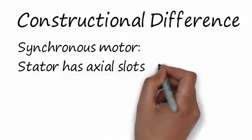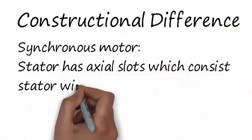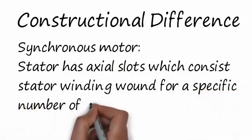Constructional difference - Synchronous motor: Stator has axial slots which consist of stator winding wound for a specific number of poles.